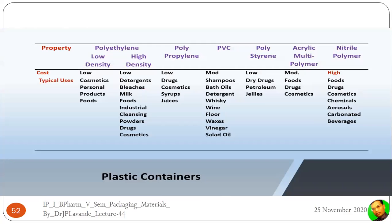In the plastics selection table, the different materials are classified based on their cost. Polyethylene is subdivided into low density and high density. There is also polypropylene, polyvinyl chloride, polystyrene, acrylic multipolymers, and nitrile polymers. Among all these, the nitrile polymer is the most costly plastic material, while polyethylene is available at a low, affordable price. PVC is available at a moderate cost.